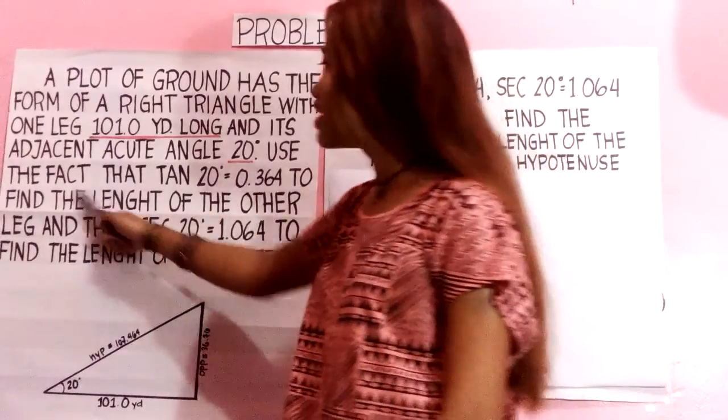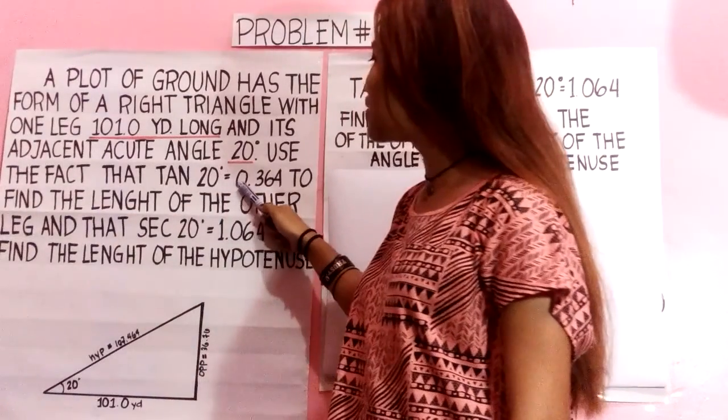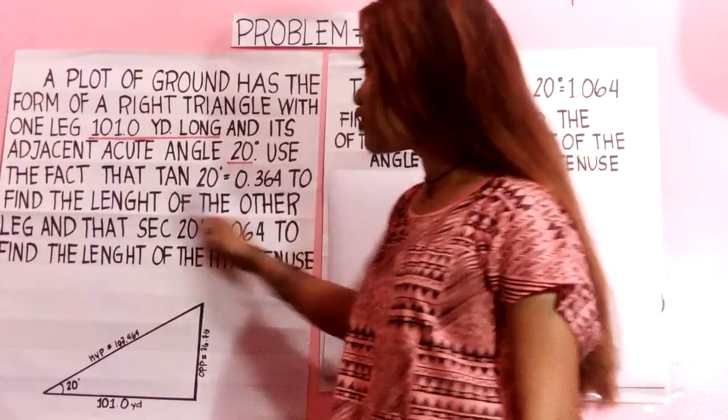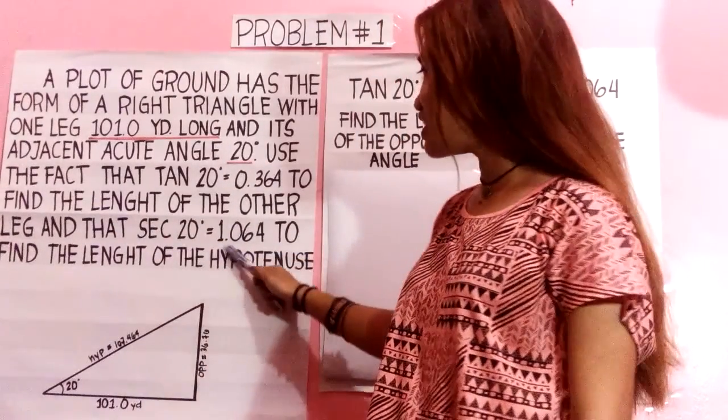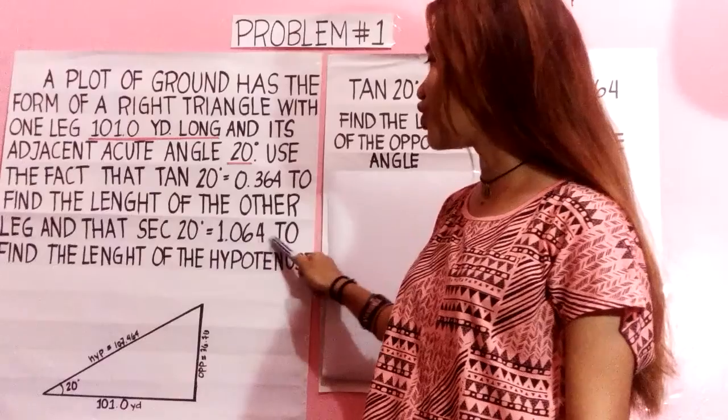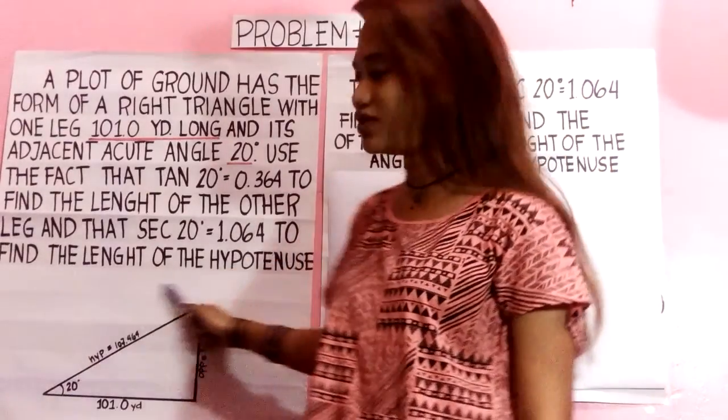Use the fact that tan 20 degrees equals 0.364 to find the length of the other leg, and that sec 20 degrees equals 1.064 to find the length of the hypotenuse.